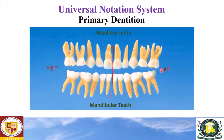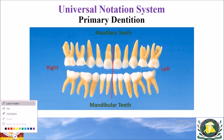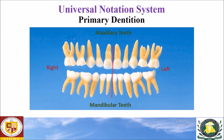For the right maxillary first molar — this is the second molar and this is the first molar — the notation in the universal notation system is alphabet B. The sequence starts with A for the second molar, then B for the right maxillary first molar, then C, and so on.